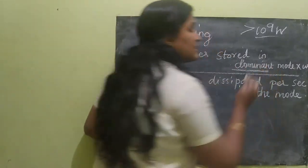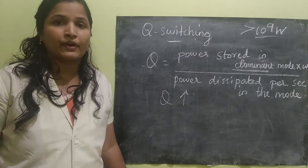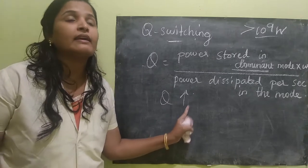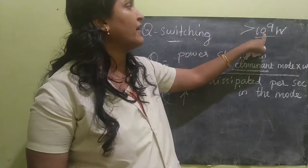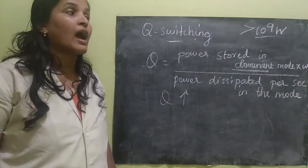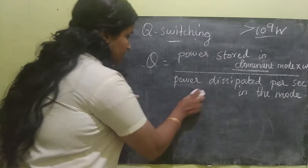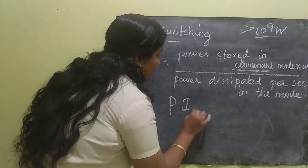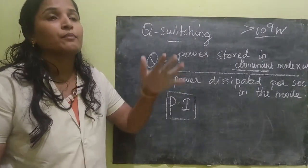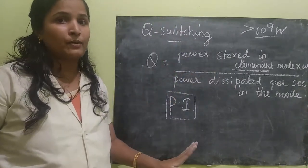If the dominant mode power is very high, then we have a very high Q-switching rate. So if the Q-factor is very high, then automatically the power of the laser will be very, very high — greater than 10 to the power 9 watts. Q-switching works on the principle of achieving great population inversion. Population inversion means the population of the higher energy level will be very high.